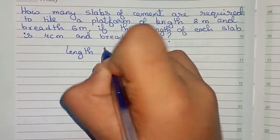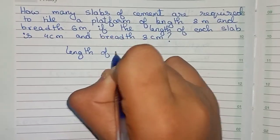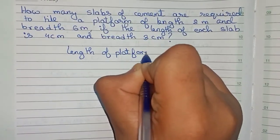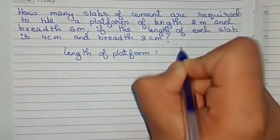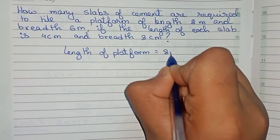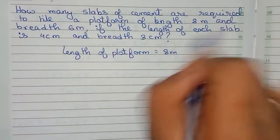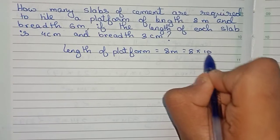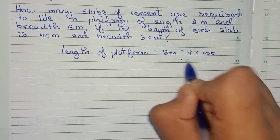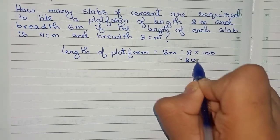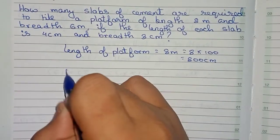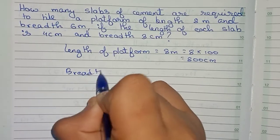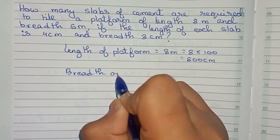First, the length of the platform is equal to 8 meters. Converting it into centimeters: 8 into 100, that is equal to 800 centimeters.